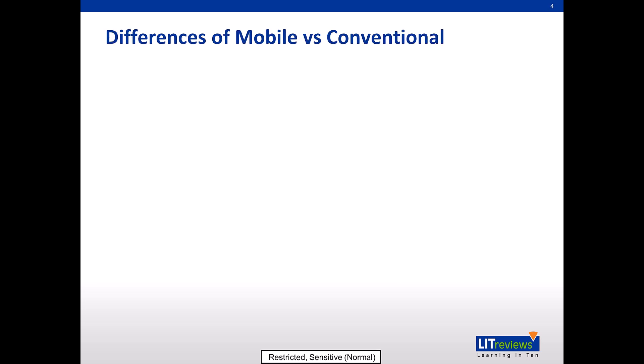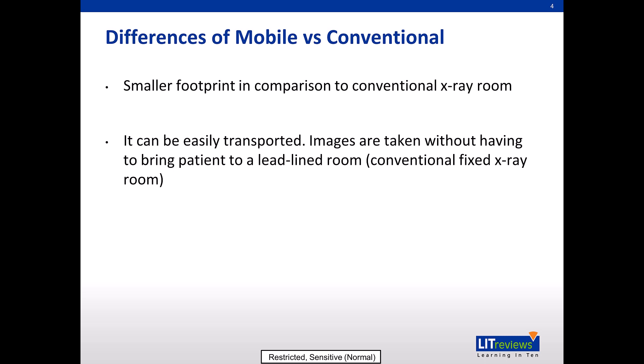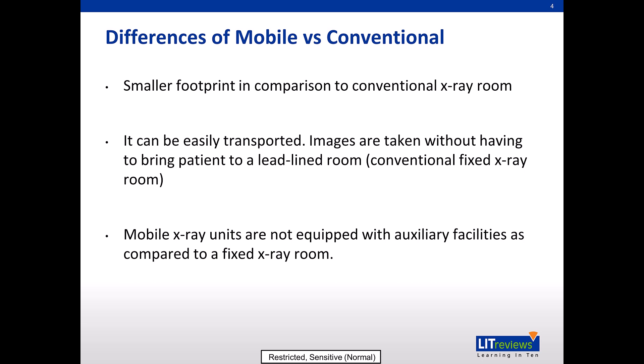There are differences between mobile and conventional x-ray units. Essentially, a mobile x-ray unit is smaller than a conventional fixed unit and can be moved. It allows radiographers to take x-ray images of patients without having to transport them into a specially aligned room. Mobile x-ray units are not equipped with auxiliary facilities, which includes the degree of flexibility and movement of the x-ray tube, table, and the availability of positioning aids. As such, it has limitations in performing certain bedside imaging.